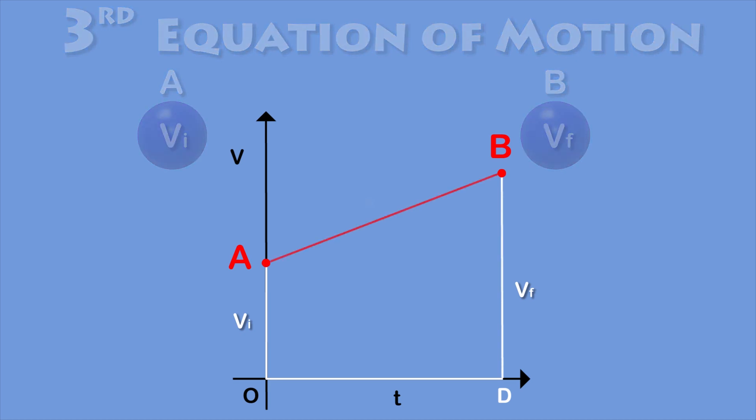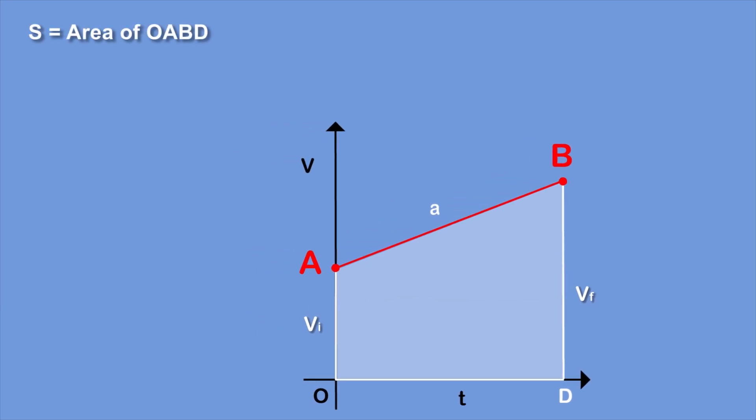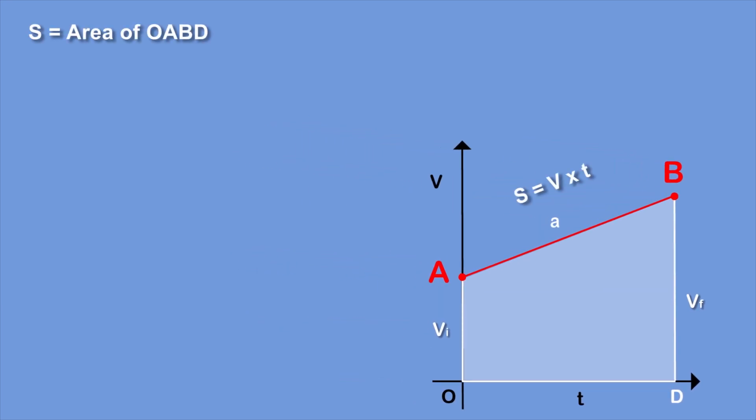Now the area under the line AB which is OABD is the total distance covered by the body, as distance is velocity into time. So total distance is equal to area of OABD.